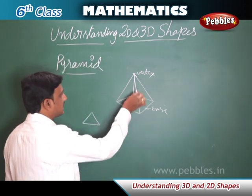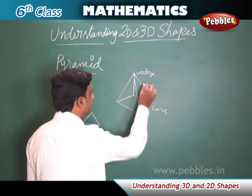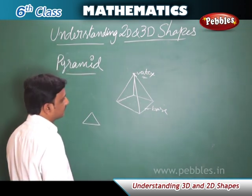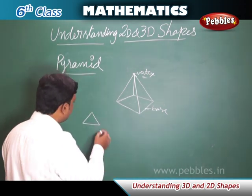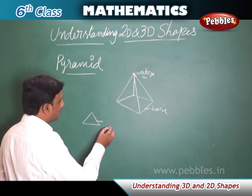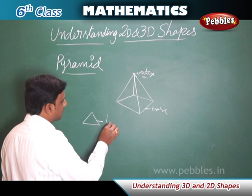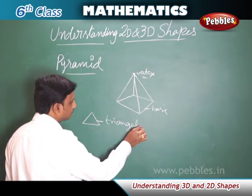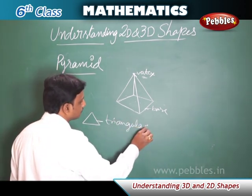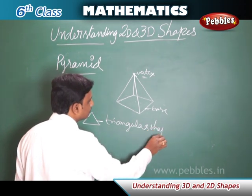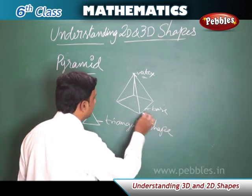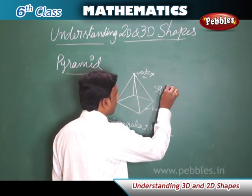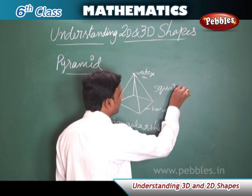In a pyramid, the faces meet at a common point called the vertex. For a triangular pyramid, the base is also triangular in shape. A pyramid with a square base is called a square pyramid.